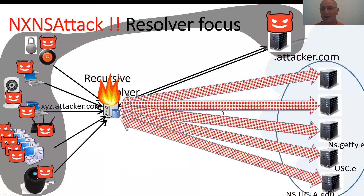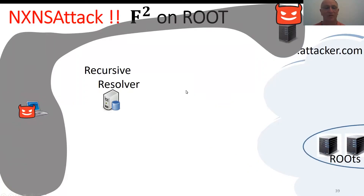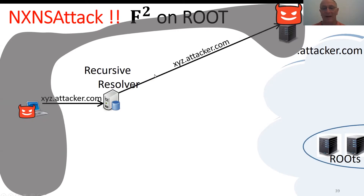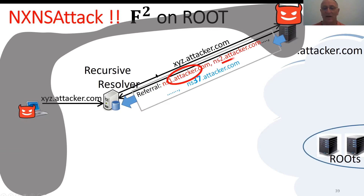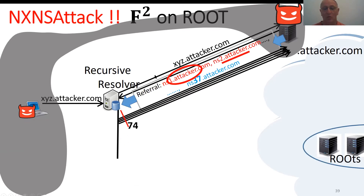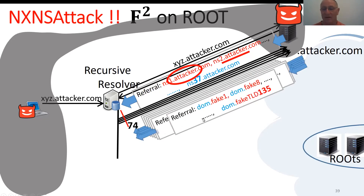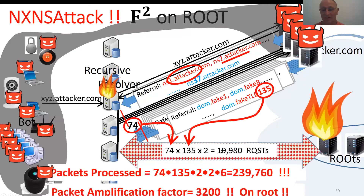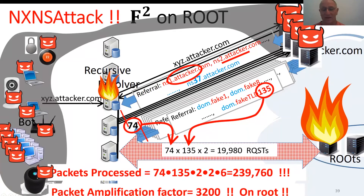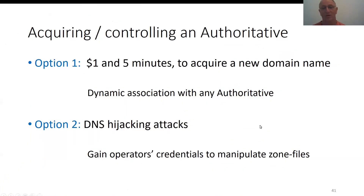The last variation of our attack doubles the amplification factor by having the attacker first attack itself. It then has the credit to issue 74 referral responses, each with 135 fake top-level domains. The target is now the root servers, which must resolve those top-level domains — 20,000 resolutions for just one request — giving an amplification factor of 3,200. The root servers are hit with a huge number of packets, and with a large botnet it becomes much larger.